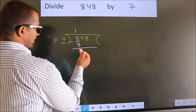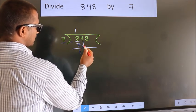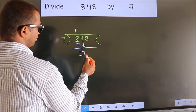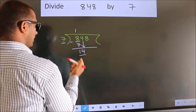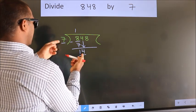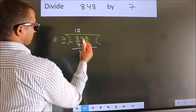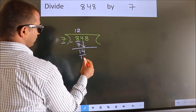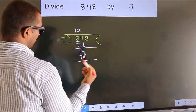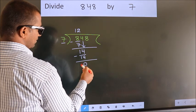After this, bring down the beside number. So 4 down. So 14. When do we get 14 in the 7 table? 7 twos — 14. Now we subtract. We get 0.